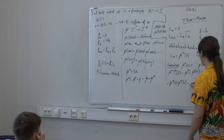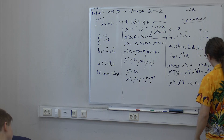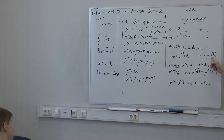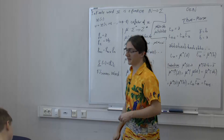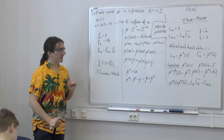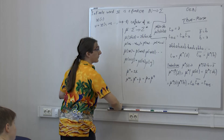A sufficient condition — call it a lemma: if mu is a morphism, a is a letter, mu(a) = a·u where u is non-empty, and no image of any letter is empty, then mu^omega(a) exists. To prove it, you show by induction that mu^n(a) is a prefix of mu^{n+1}(a): the base case holds because a is explicitly a prefix of mu(a), and at each step you add more content, so the length grows to infinity.